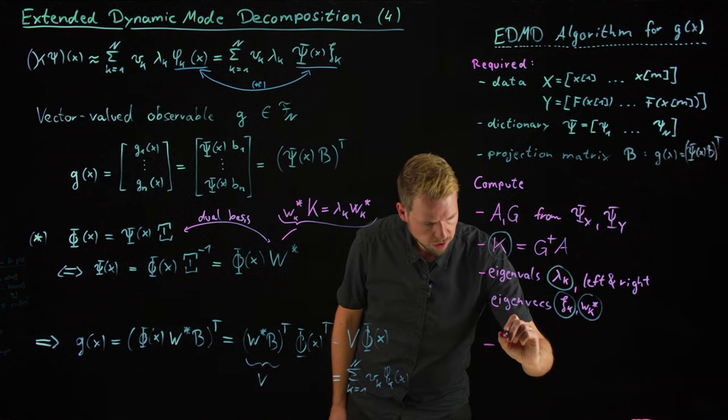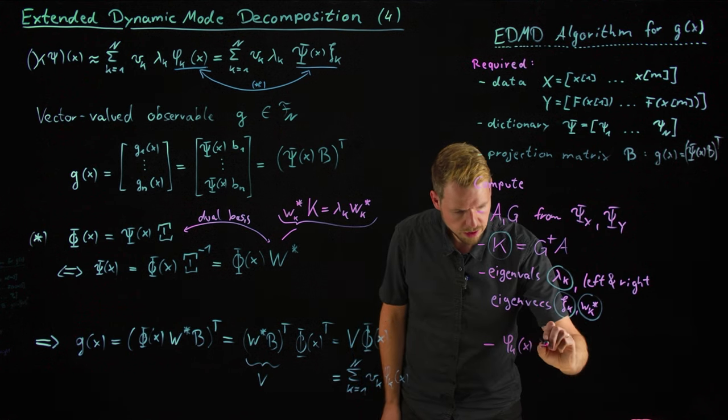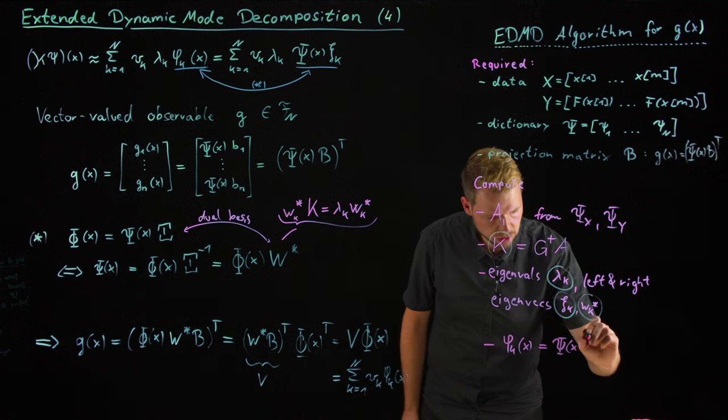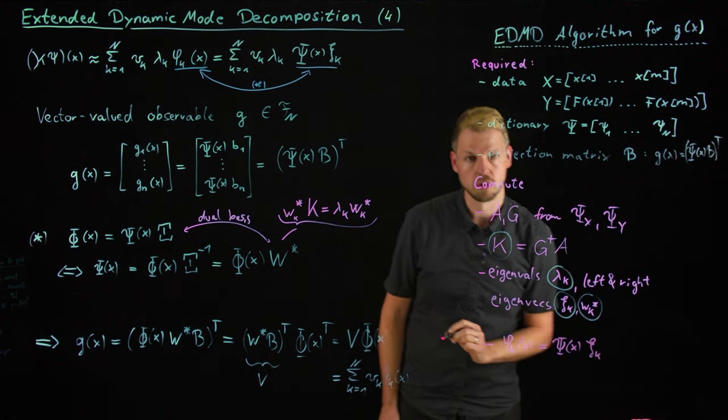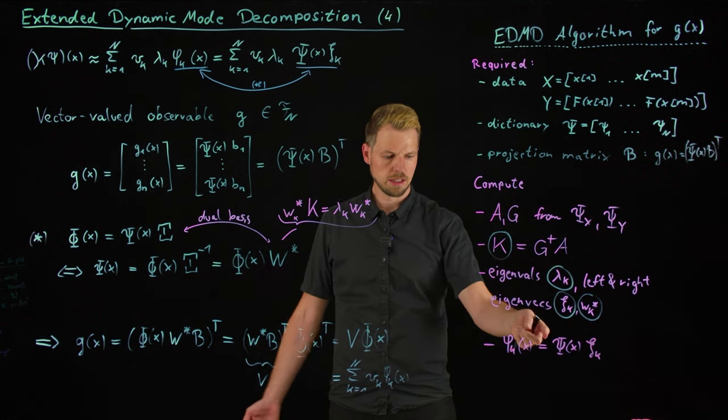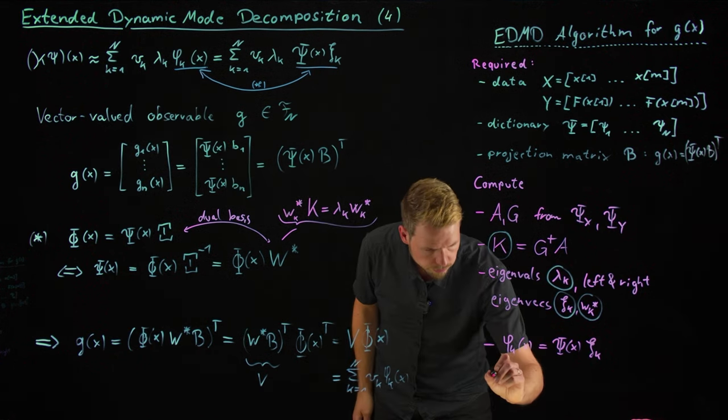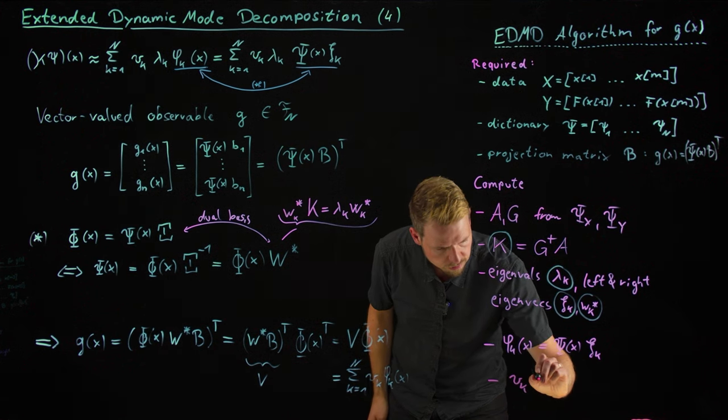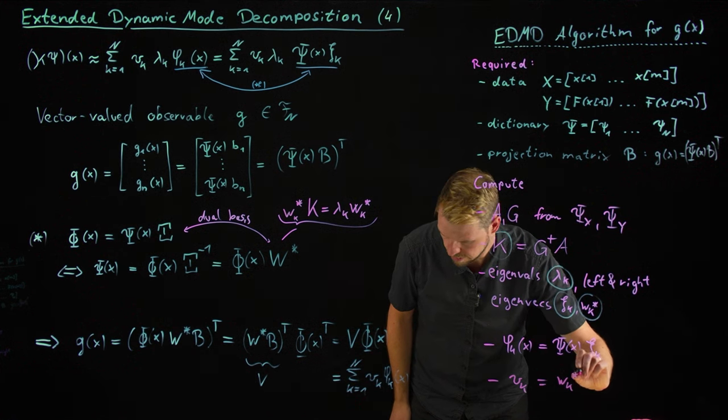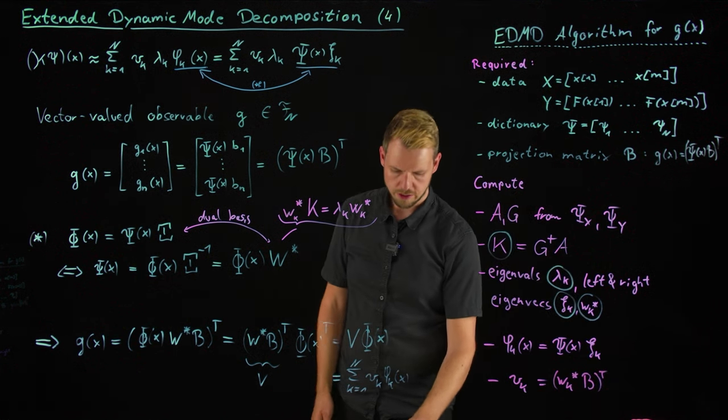And then we're basically there. So what we need to do is we can compute eigenfunctions. Phi k evaluated at some point x is our dictionary psi evaluated at x times the coefficients, which are now the eigenvectors. And so this is really a function, you can plug in any x to get the function evaluated at arbitrary x. So we have our eigenfunctions, we have the eigenvalues, and the Koopman modes are given by W k star times the projection matrix B.